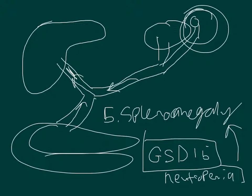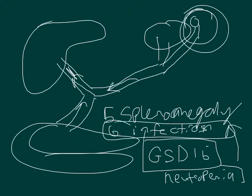Neutrophils are your body's first defense against disease. So a lot of times you're going to see a comorbidity — some type of other disease that looks unrelated but isn't. Things like a sore throat or an ear infection. So infection is a pretty likely finding.